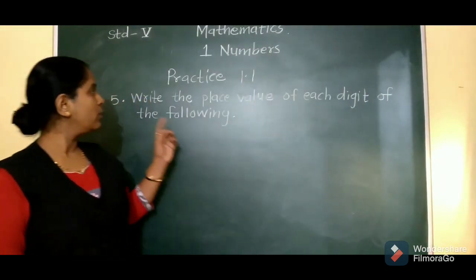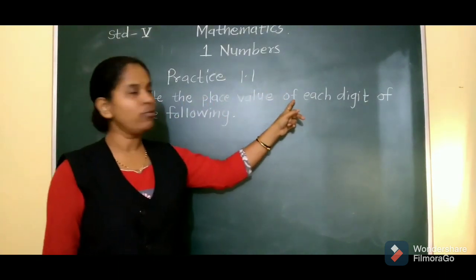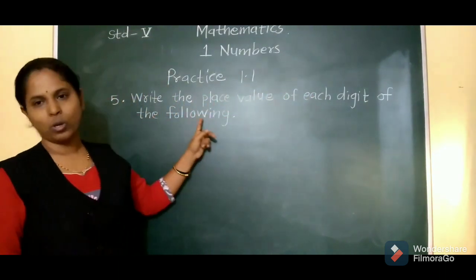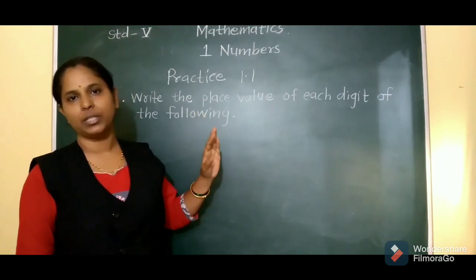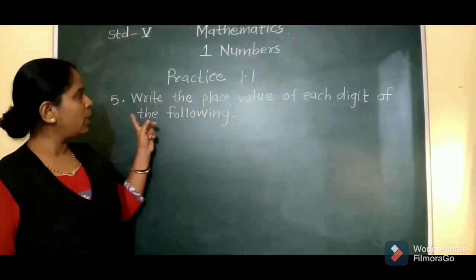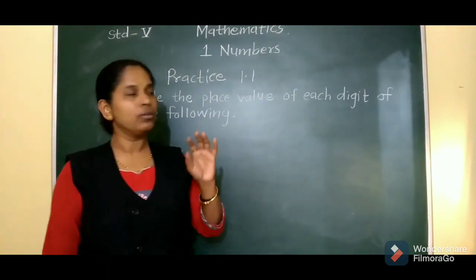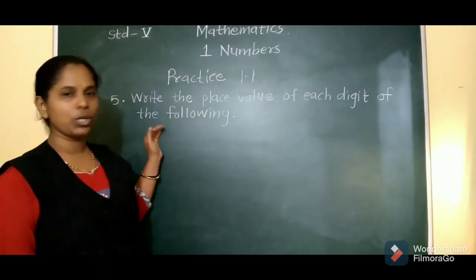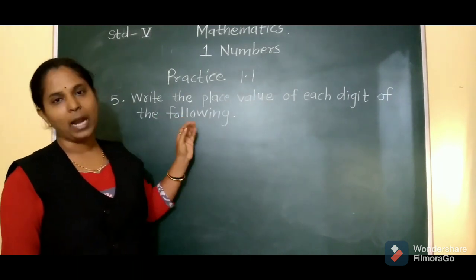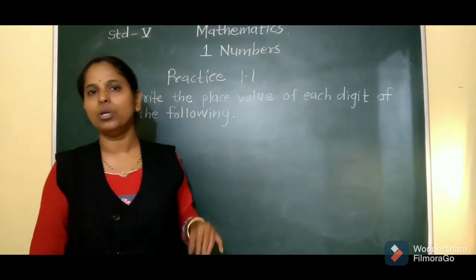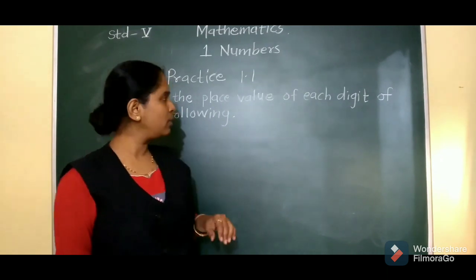In question number 5: write the place value of each digit of the following. In the textbook there are three questions given. I will solve one and show you, and the rest two you will have to do as homework. The first number is 41,34,256.